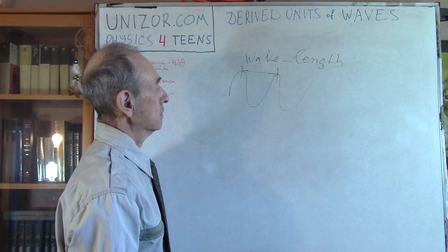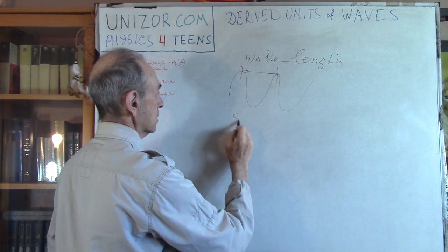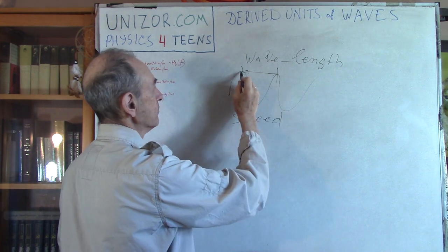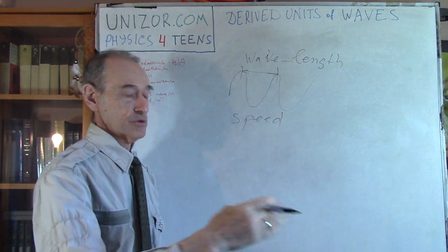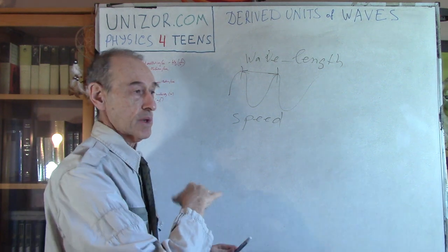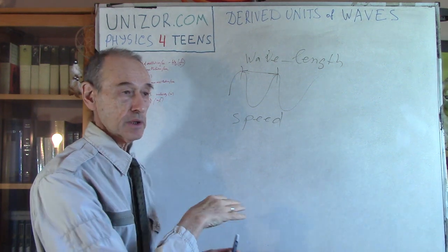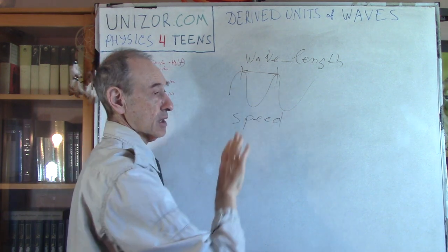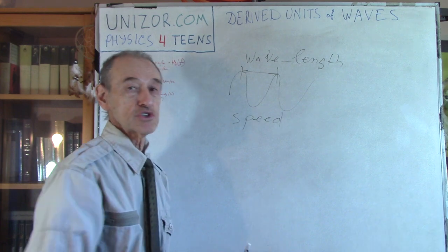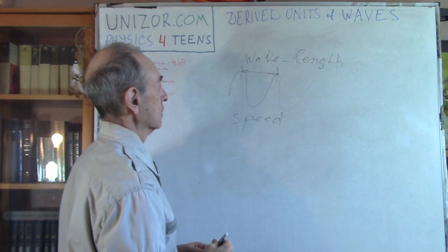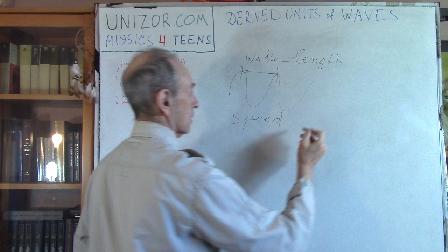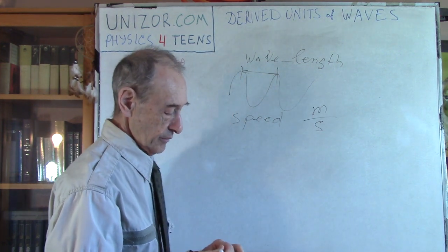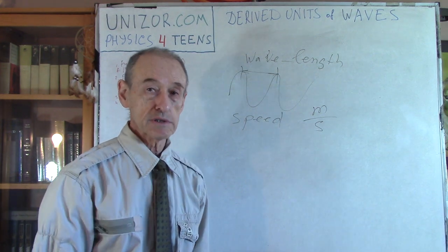And the last one is wave speed. Wave speed is, now as you saw on the surface of the water, when the waves are coming, the peak goes from one spot to another. So there is certain speed at which the peak is moving. So that's measured, again, in something which you know, meters per second.